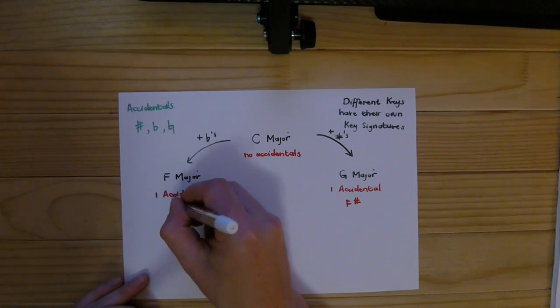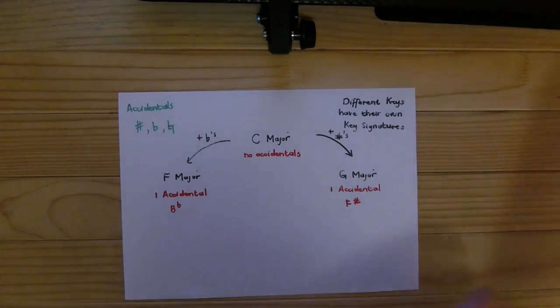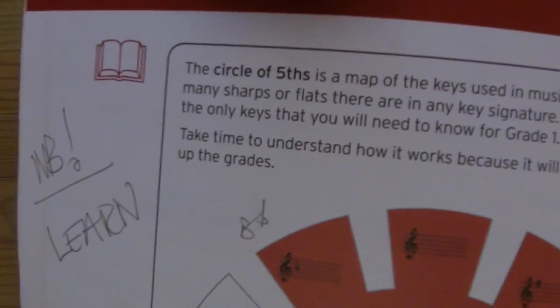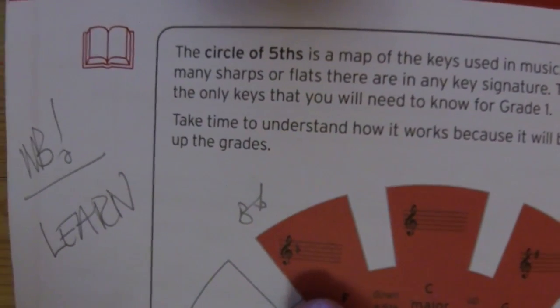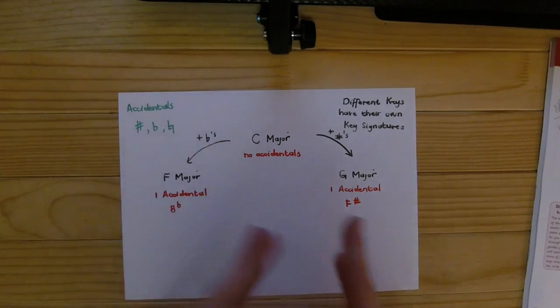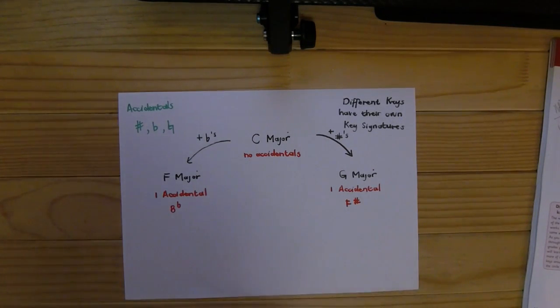That is B flat. You can see right there in the Trinity College workbook we have B flat. We can now go five again from G to get to the next one, which is D, and we can go five again to get to A. We add a sharp each time, but there's a little bit more to that.